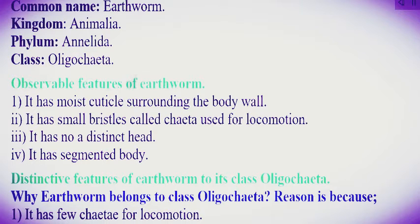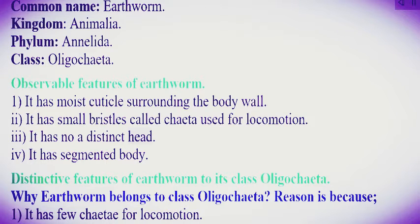Observable features of earthworm: one, it has a moist cuticle surrounding the body wall; two, it has small bristles called chaetae used for locomotion; three, it has no distinct head; four, it has a segmented body.